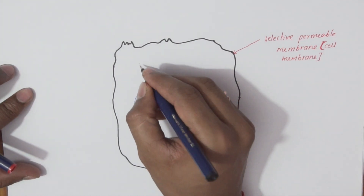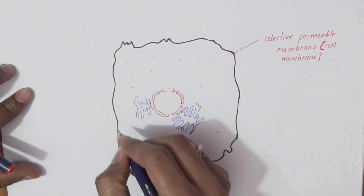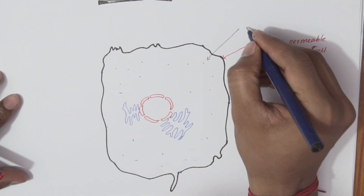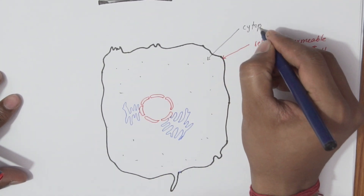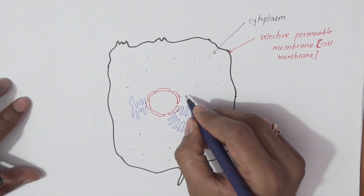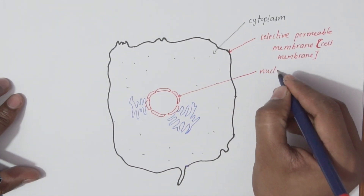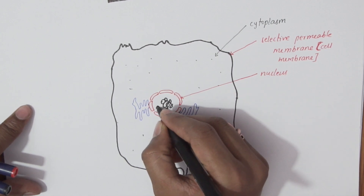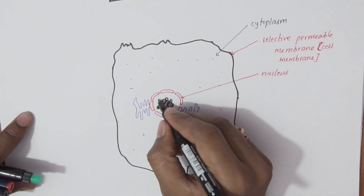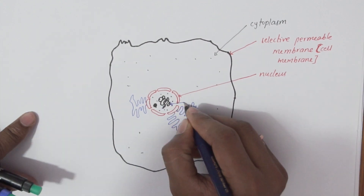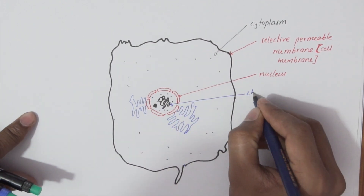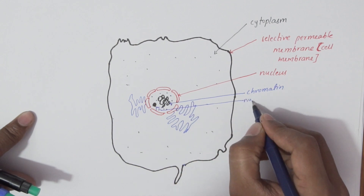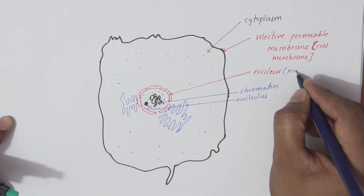Within the membrane, a jelly-like substance containing both minute and large dispersed particles and organelles is filled, and is called the cytoplasm. There is a centrally located nucleus with chromatin and nucleolus, enclosed within the nuclear membrane.